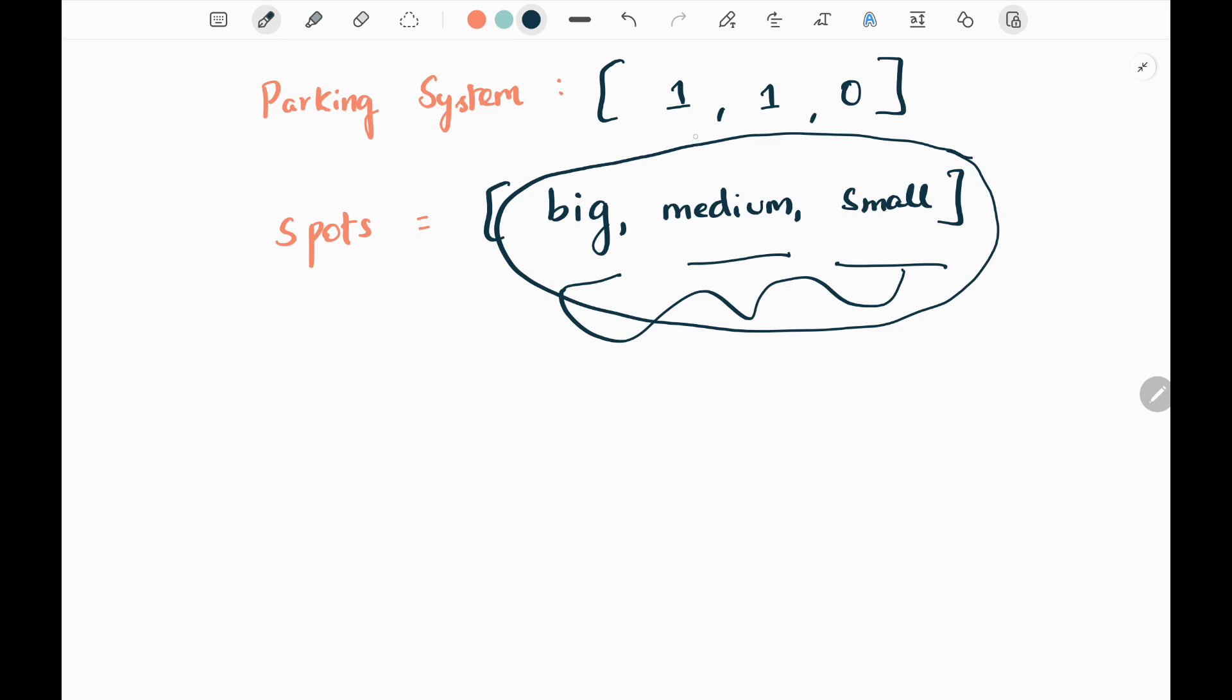Initially we will have an input for the parking system which indicates the number of slots available for each particular type of car. So first we will initialize that. We will replace big with 1, medium with 1, and small with 0. So there is one slot to park a big car, one slot to park a medium car, and there is no slot for parking a small car in this system. This input is just for this particular example.